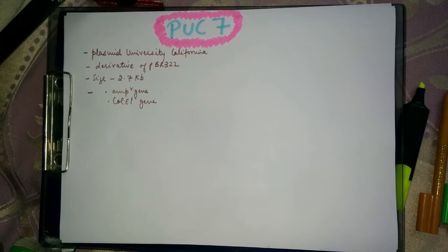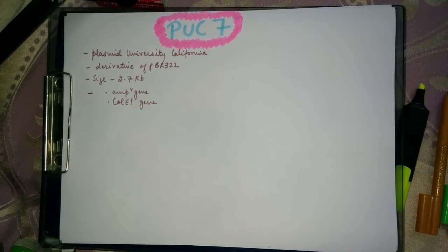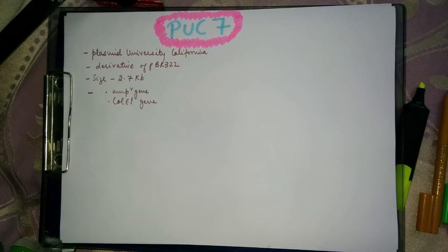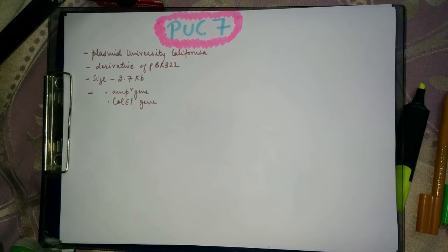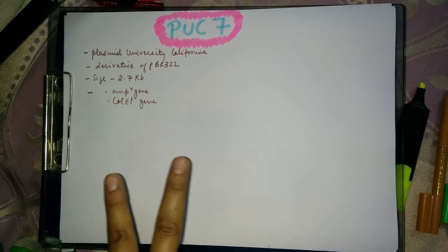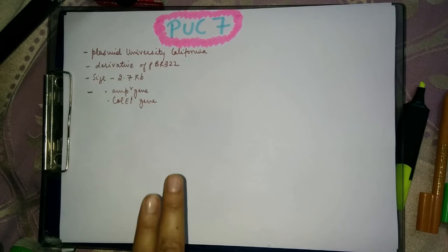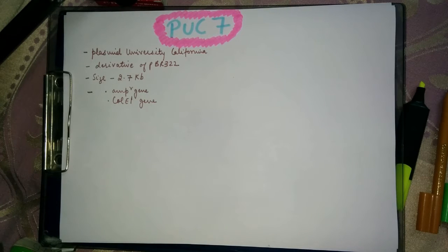Instead of the tetracycline resistant gene, there is a second marker: the E. coli lac Z alpha gene, which encodes the alpha fragment of beta-galactosidase. This enzyme hydrolyzes galactose. Having a minimum of two markers helps in the easy selection and identification of recombinant vectors.